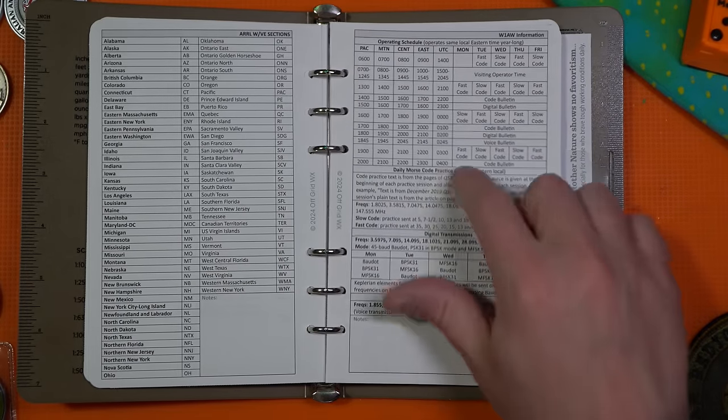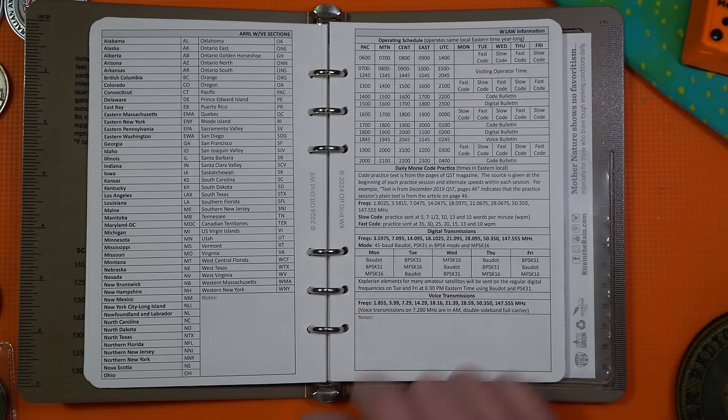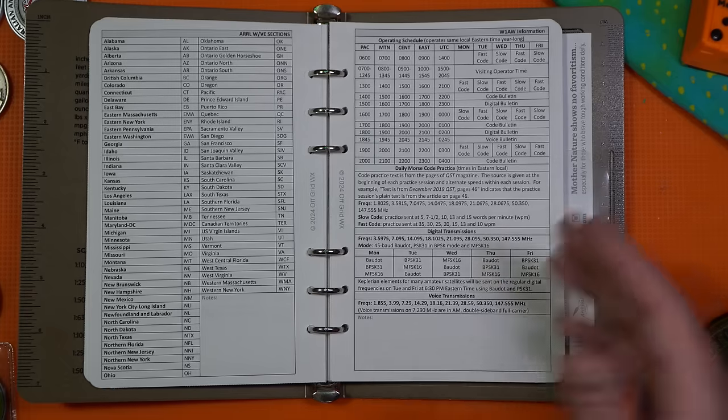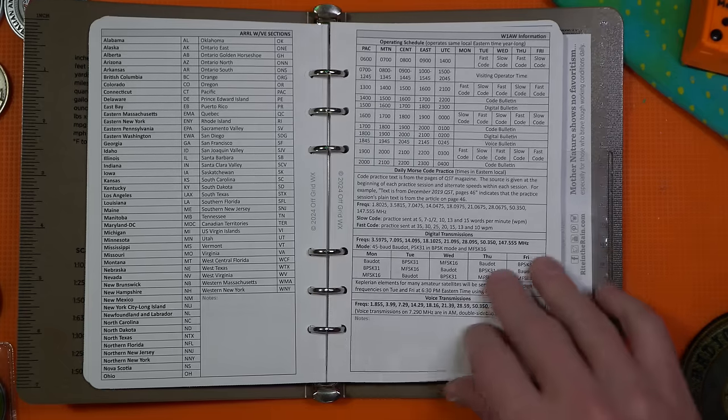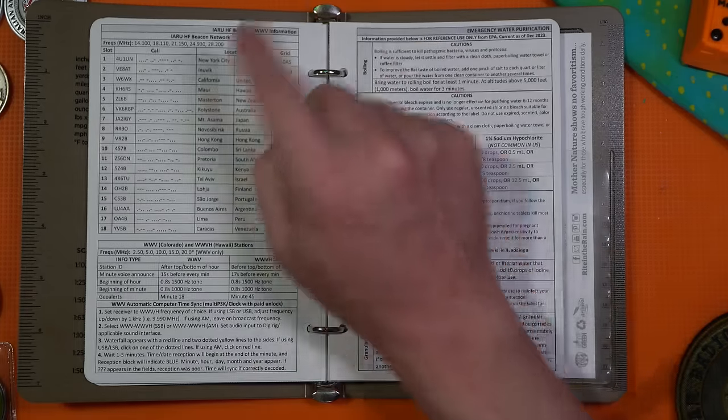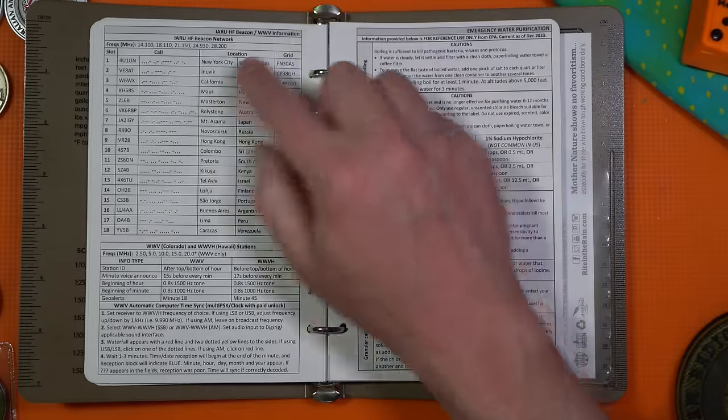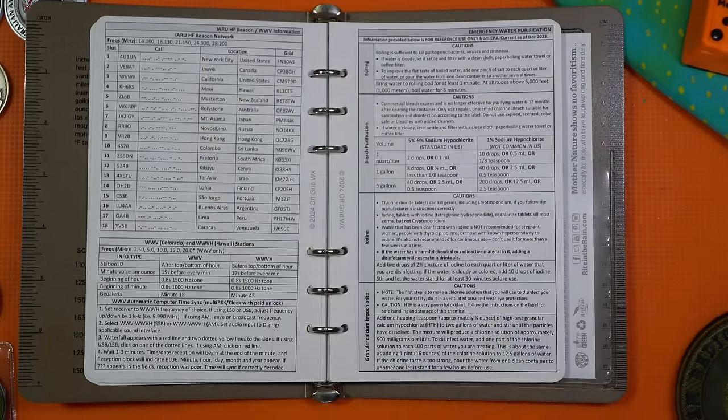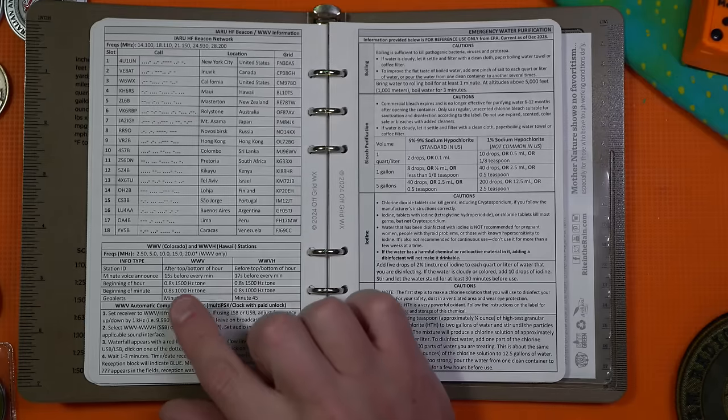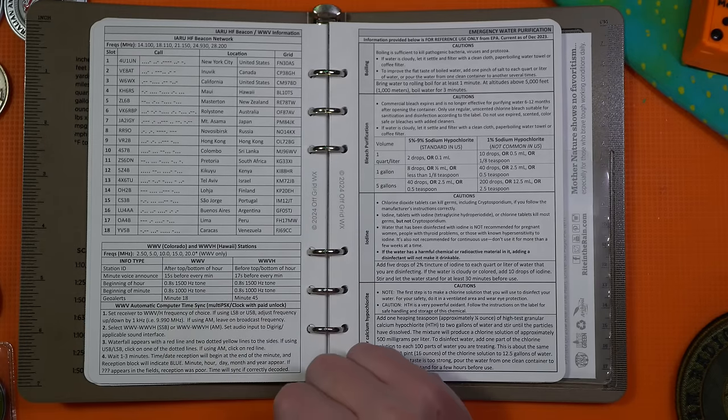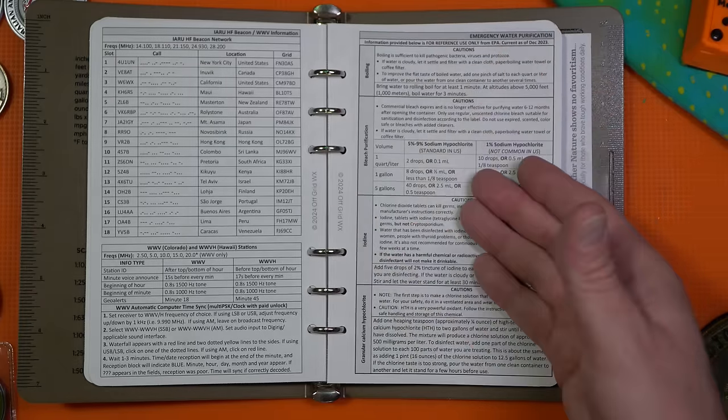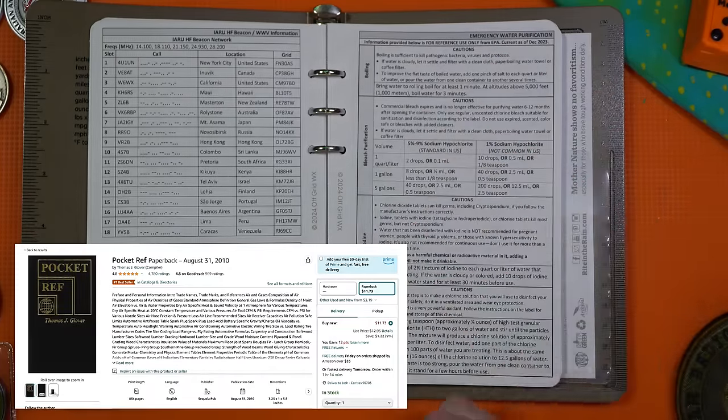ARRL abbreviations for sections, Morse code practice times, the frequency that they're going to be on, digital transmissions for different types of contacts that they make and the frequencies they use. Morse code IARU beacons. These are beacons that you're going to hear on like 28.200 for 10 meters, et cetera. WWB, WWB information for time tracking or automatic time sync.